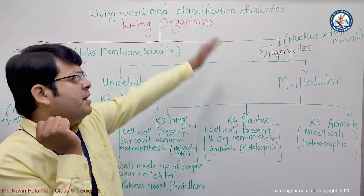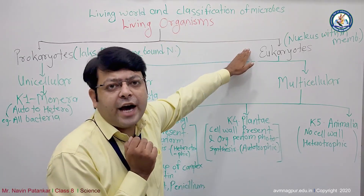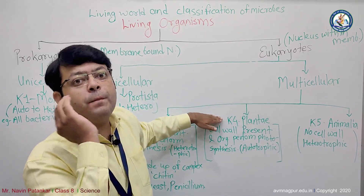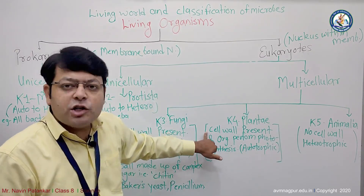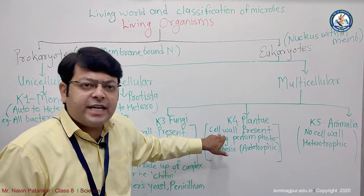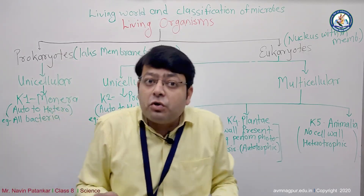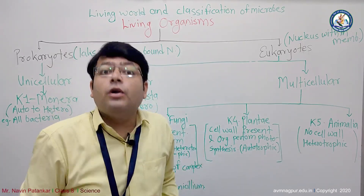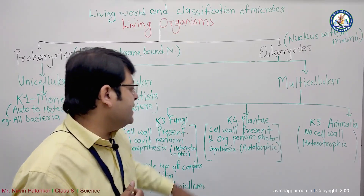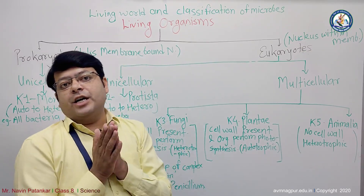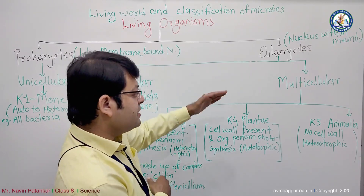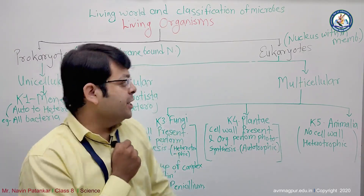Kingdom Four is Plantae — eukaryotic and multicellular organisms. Cell wall is present in all plants, and they can perform photosynthesis. Their mode of nutrition is autotrophic in nature. So Kingdom Four is Plantae.